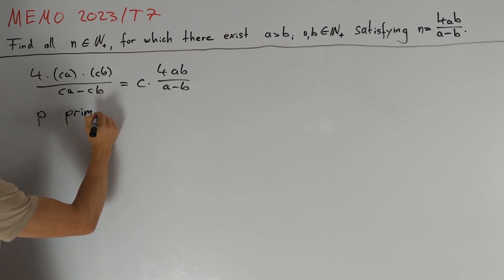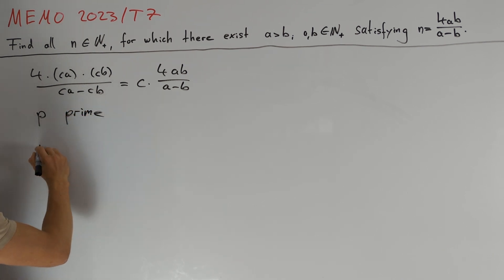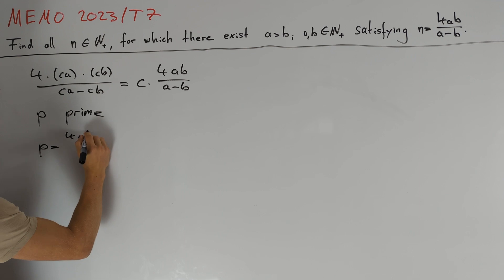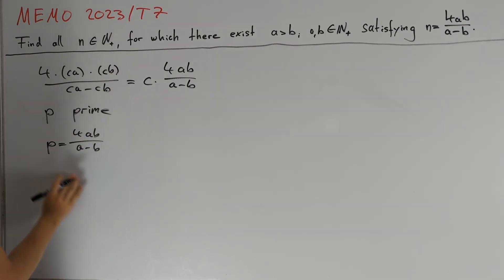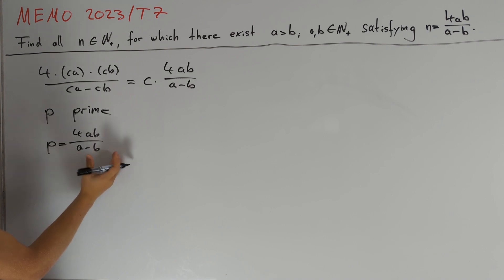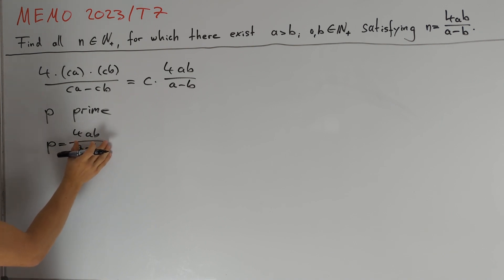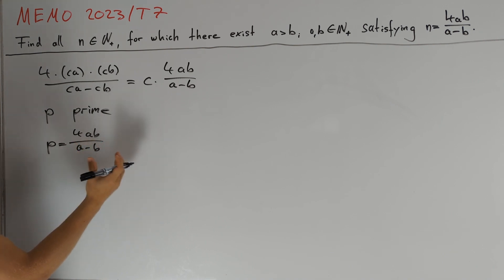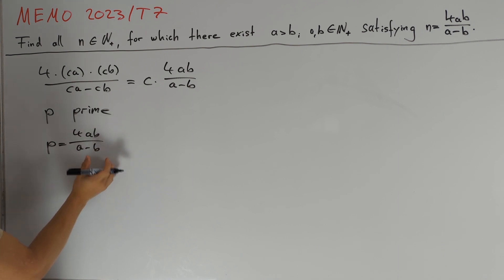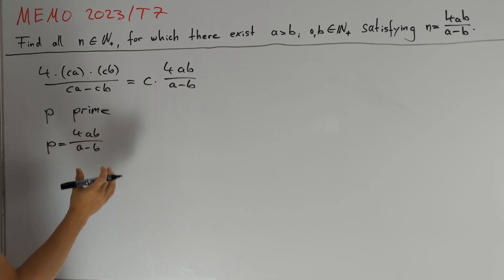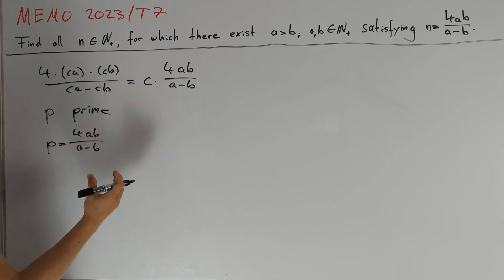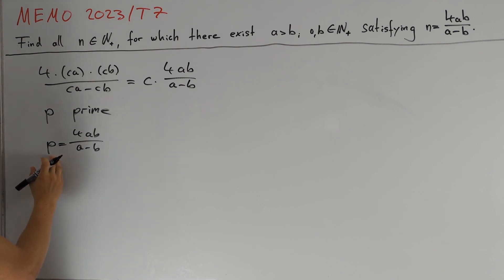So let p be prime and consider the equation p equals 4ab divided by a minus b. We see that p must divide the numerator, meaning p divides 4ab. It would be nice if p also divides the product a times b, so we want to consider two cases: p equals 2 and p not equal to 2.